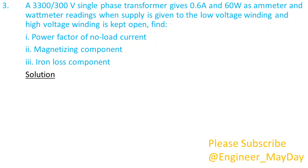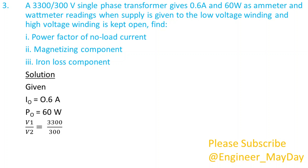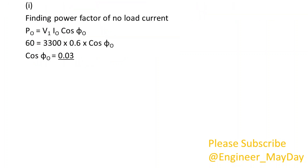Solution. Given: I0 equals 0.6 ampere. P0 equals 60 watts. V1 over V2 equals 3,300 over 300. 1. Finding power factor of no-load current: cos phi-0 equals 0.03.